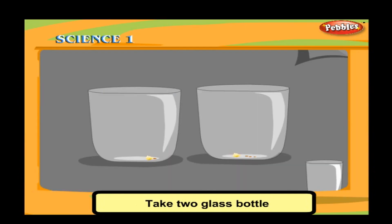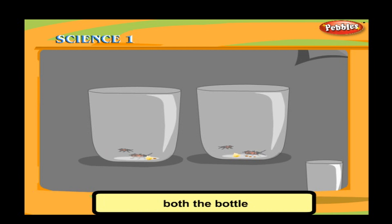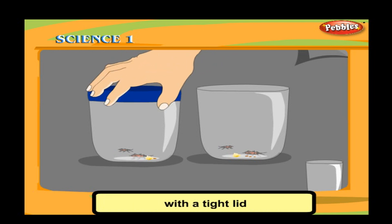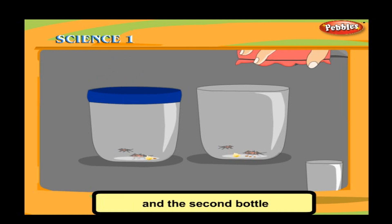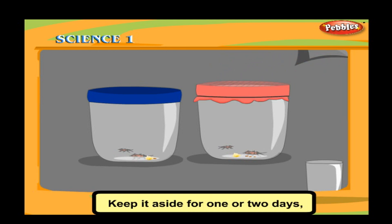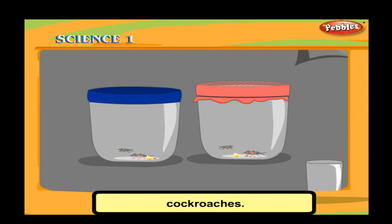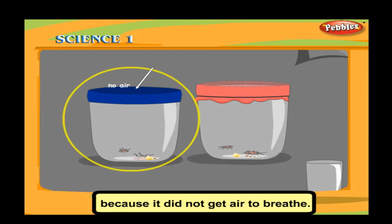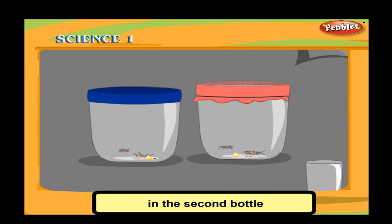To show that living things cannot live without air, take two glass bottles and some cockroaches. Put cockroaches in both bottles — close the first with a tight lid and the second with a lid that has holes. After one or two days, the cockroach in the first bottle dies because it got no air, while the cockroach in the second bottle lives because it gets air to breathe.